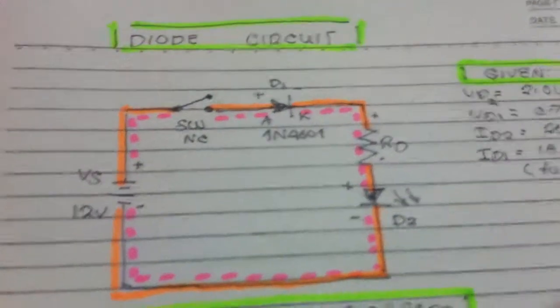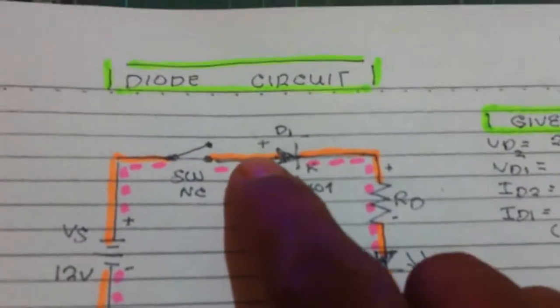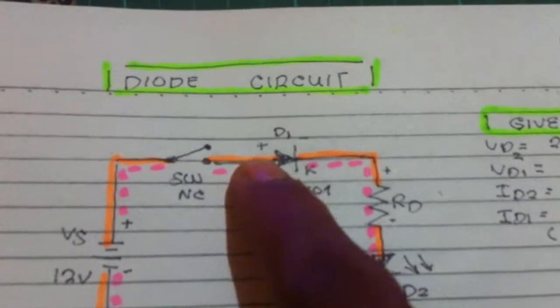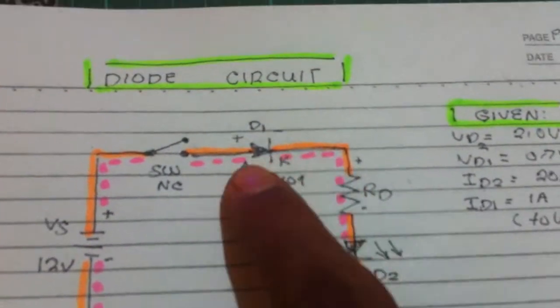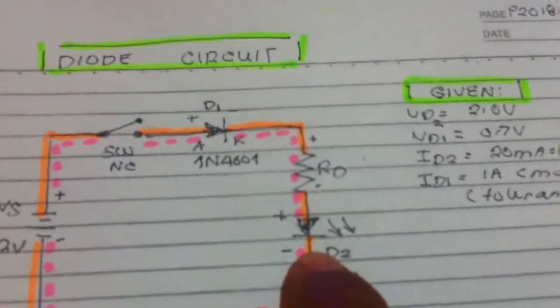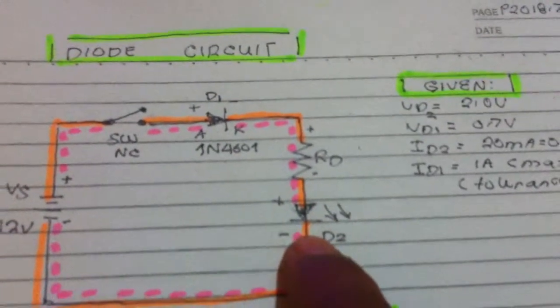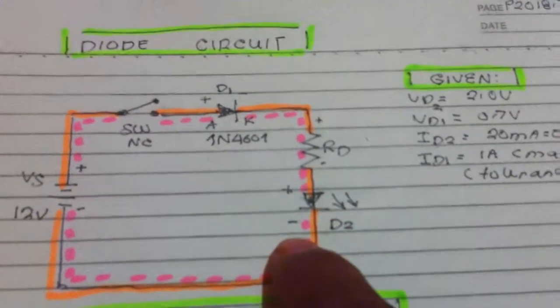That is the polarity: anode and cathode. This is a regular diode and this one is a light emitting diode - anode and cathode.